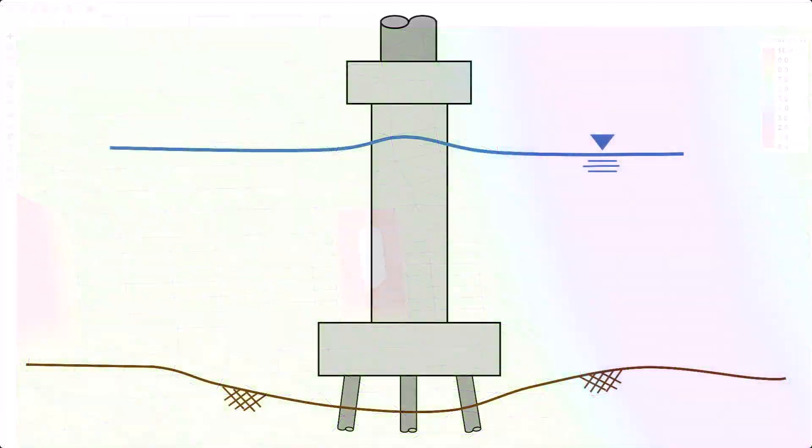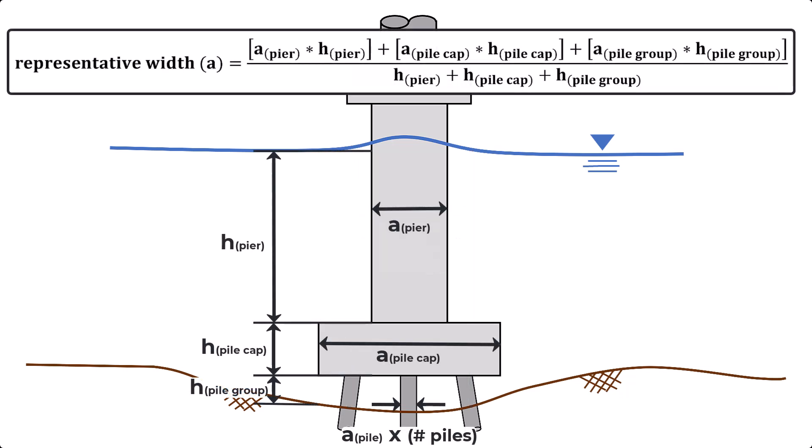Alternatively, a representative area can be used when two or more components of the pier are exposed to flow. For this method, the user scales the width of the pier to the relative flow depth of each component.